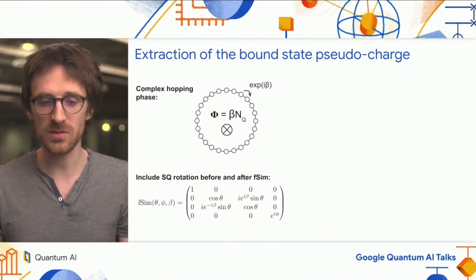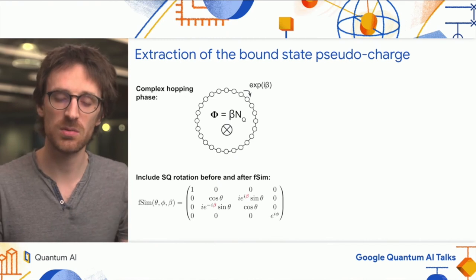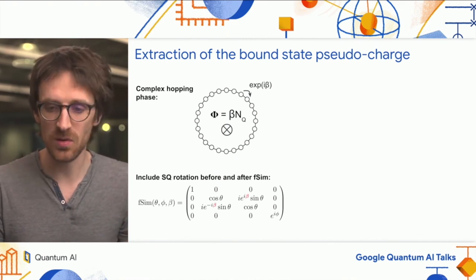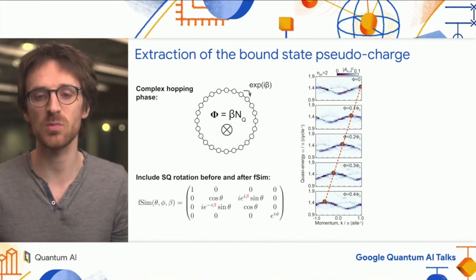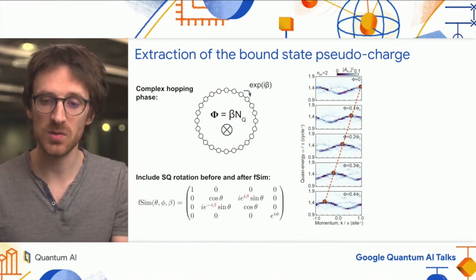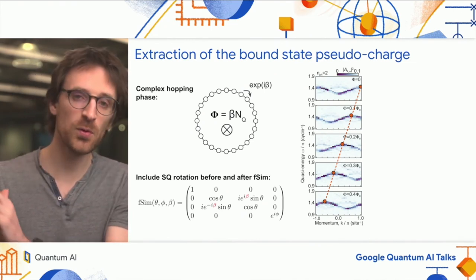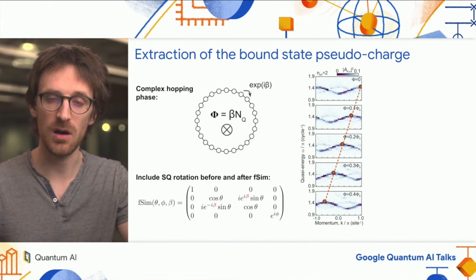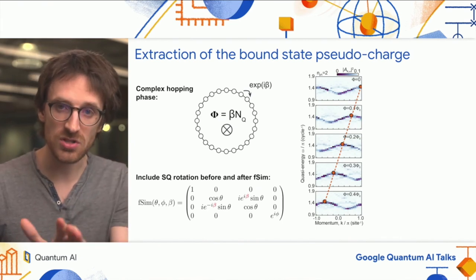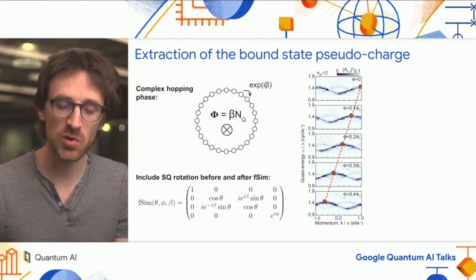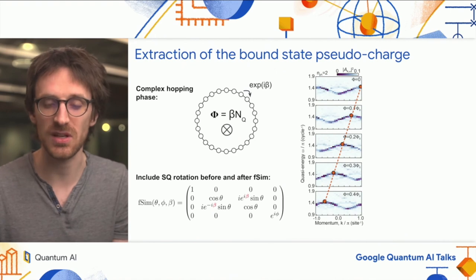When we vary the flux threaded through the ring from zero to one, we see that the bound structure shifts in the Brillouin zone. The bound structure shifts by a full Brillouin zone as we sweep the flux from zero to half, and this means the charge of this bound state is two—which is expected because it equals the number of photons inside the bound state.